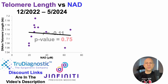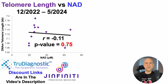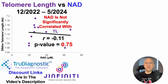In terms of the correlation, we can see that it's not significant. Telomere length is not significantly correlated with NAD. As you can see, that p-value, highlighted in red, is not close to below 0.05 — with a p-value of 0.75.